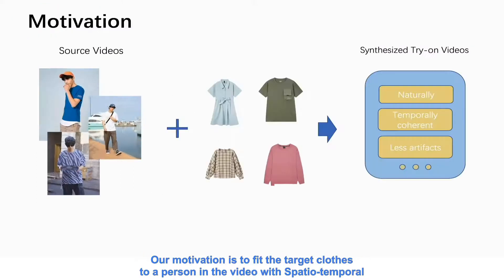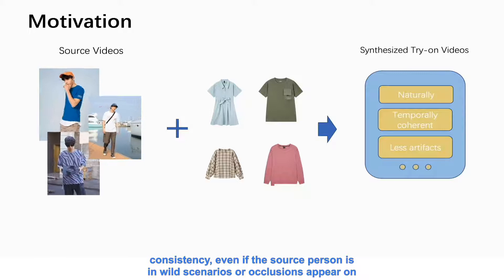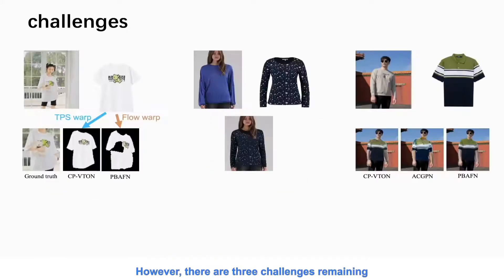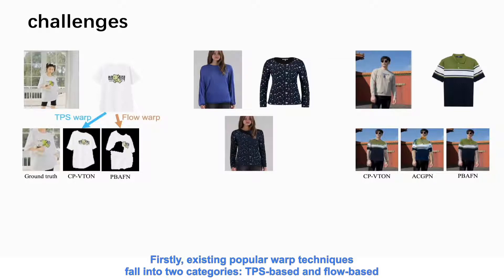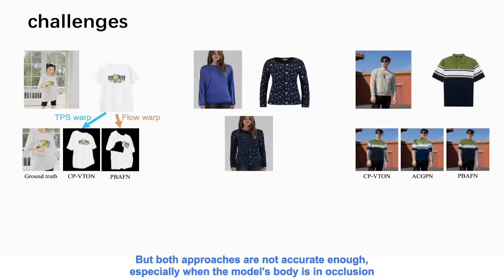Our motivation is to fit the target clothes to a person in the video with spatio-temporal consistency, even if the source person is in wild scenarios or occlusions appear on the model's body. However, there are three challenges remaining. Firstly, existing popular warp techniques fall into two categories: TPS-based and flow-based methods. But both approaches are not accurate enough, especially when the model's body is in occlusion.